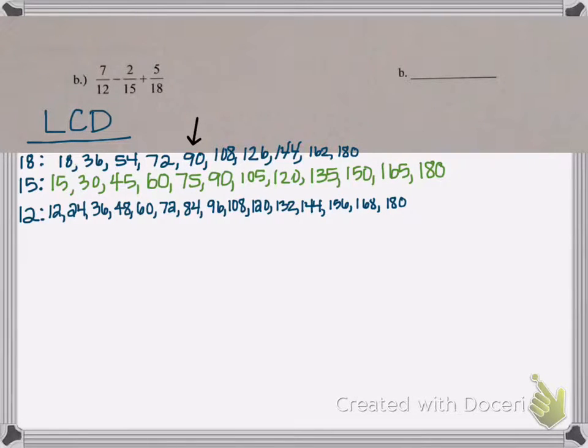And there we have it. 180 is the least common multiple of 18, 15, and 12. Now we have to figure out how many times each number got multiplied to get us 180. Or we have to figure out what we need to multiply each number by in order to get 180. So for 18, we had to do 18 times 10 because it was the 10th number in the list. 15 is 15 times 12 because it was the 12th number in the list. And for 12, 180 is the 15th number in the list, so we're going to have to multiply by 15.